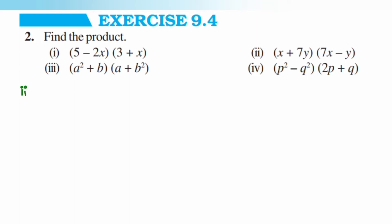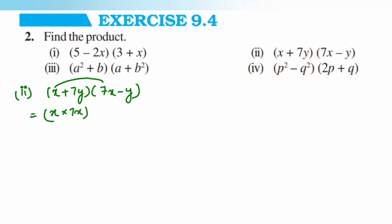The second question is (x plus 7y) multiplied by (7x minus y). You can try this by yourself — just pause the video and work on it, then check back. Multiply x with 7x, then minus x with y, then plus 7y with 7x, then minus 7y with y.